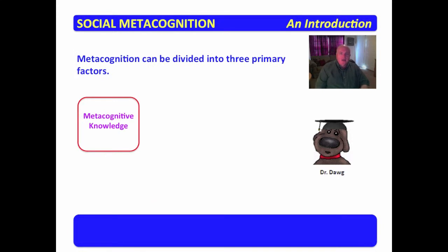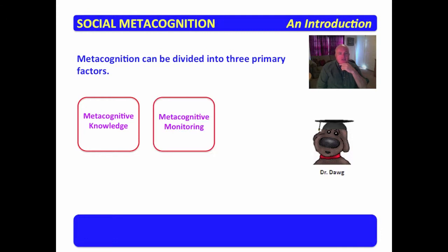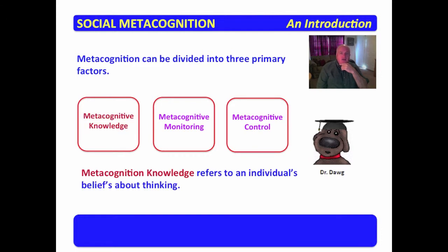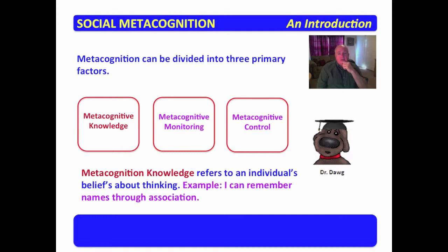Now, metacognition can be divided into three primary factors: metacognitive knowledge, metacognitive monitoring, and metacognitive control. The first, metacognitive knowledge, refers to an individual's beliefs about thinking. An example: I can remember names through association.